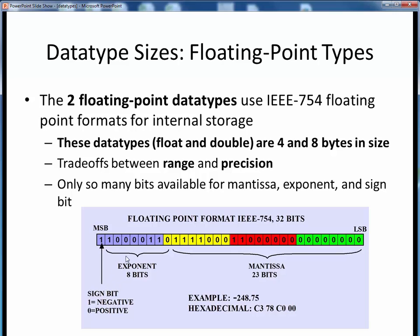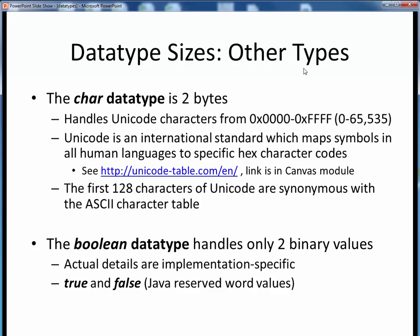So, this diagram tells us that this sequence of 32 bits, stored internally as a Java float data type variable, represents the binary storage for decimal negative 248.75. Again, don't sweat all these details, I just want to give you an idea of what's going on internally under the hood.